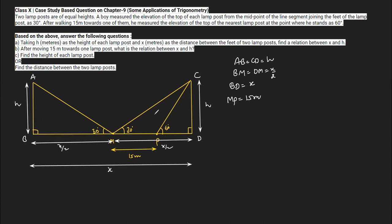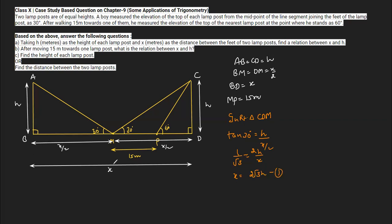To find the relation between x and h, we use right triangle CDM. In right triangle CDM, the perpendicular and base are given but not the hypotenuse, so we use tan theta. Tan 30 equals perpendicular upon base, which is h upon x by 2. Tan 30 is 1 by root 3, which equals 2h by x. Cross multiplying gives x equals 2 root 3 h. This is equation one and the answer to part A.